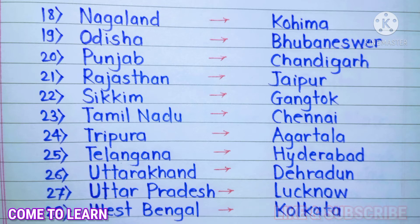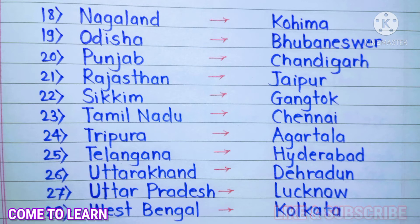19. Odisha — Bhubaneswar. 20. Punjab — Chandigarh. 21. Rajasthan — Jaipur.